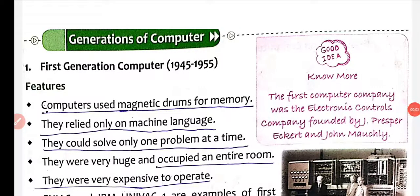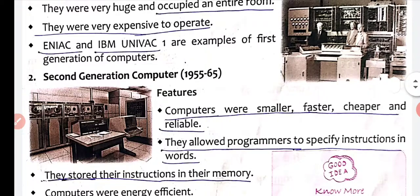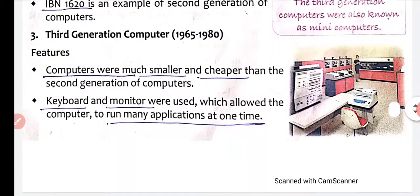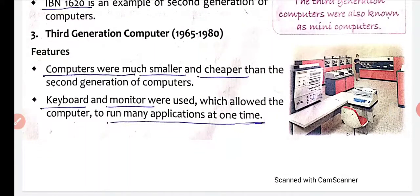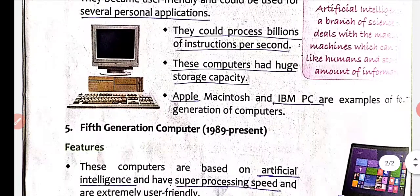Good morning students. Today we are going to discuss the five generations of computers. First generation: 1945 to 1955. Second generation: 1955 to 1965. Third generation: 1965 to 1980. Fourth generation: 1980 to 1989. Fifth generation: 1989 to present.